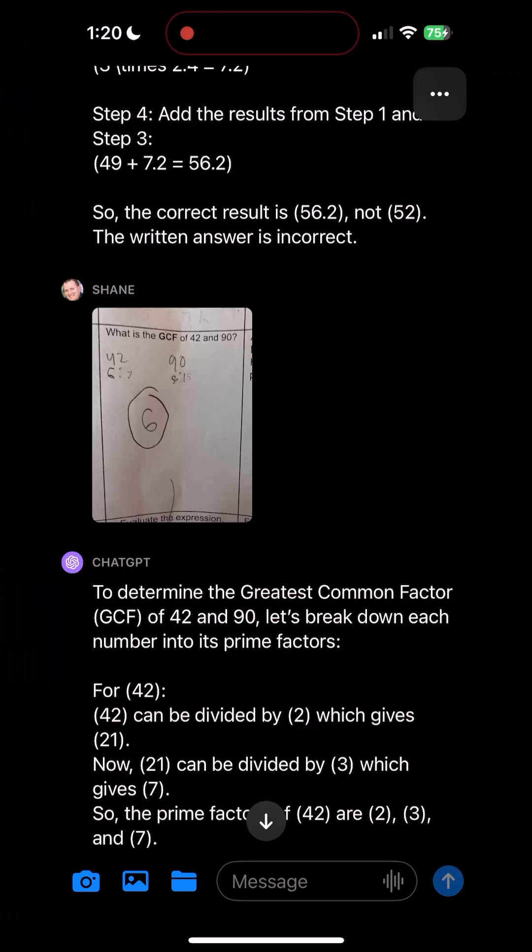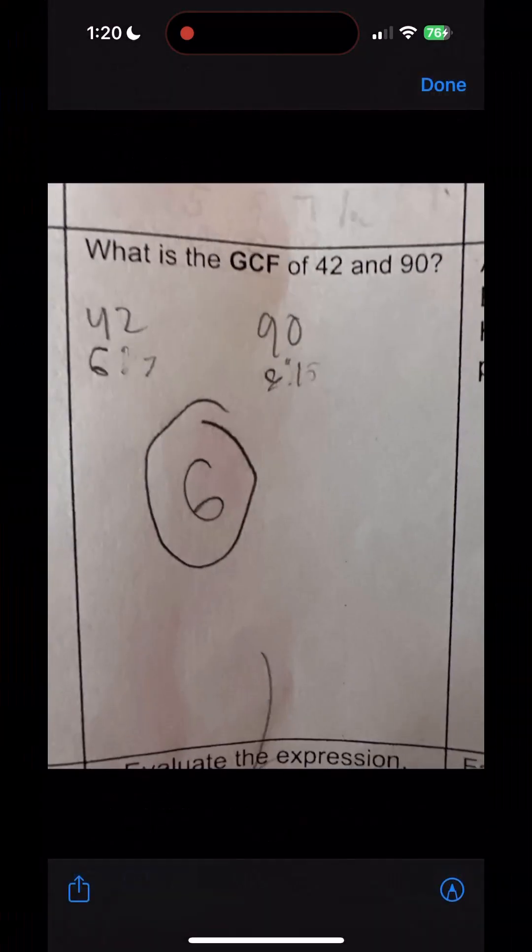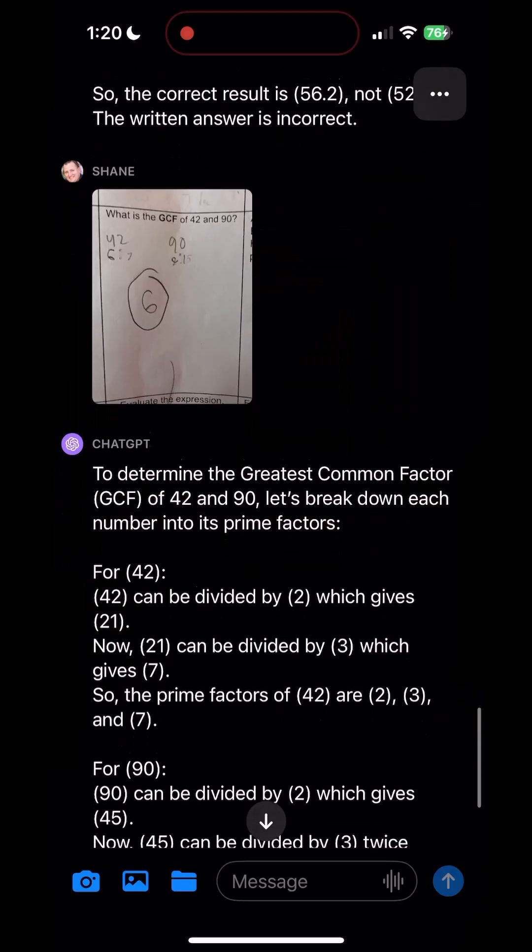All right, so jumping in the middle of the conversation from last night here, if you click on the image I uploaded using ChatGPT vision, you can see it's like, hey, what is the GCF of 42 and 90? You can see some of my kid's chicken scratch, and then what I guess is the six circled. This is literally the photo I gave it. I gave it no context, and then I hit enter.